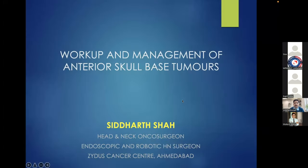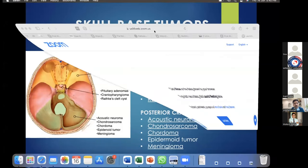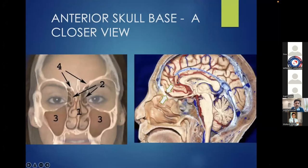Management of anterior skull base tumors. The anterior skull base has been divided into anterior, middle and posterior regions. The most common lesions affecting the anterior skull base arise either from the brain side, from the olfactory epithelium, or from the nasal and sinus sides. This entire area can harbor tumors arising from the intracranial cavity, the cribriform region, or the paranasal sinuses and nasal cavity.